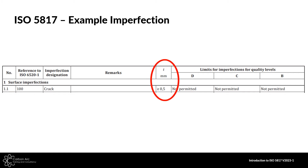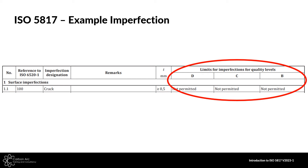We've got our D, C, and B quality level columns. For cracks, they are not permitted at any quality level. But for the majority of imperfections, you're likely to see different requirements between quality levels, so you need to understand which level you're working to. For example, in weld procedure qualification to 15614, that standard tells you at the beginning which quality levels to apply from 5817 for different aspects — generally giving some a class B, some a class C.